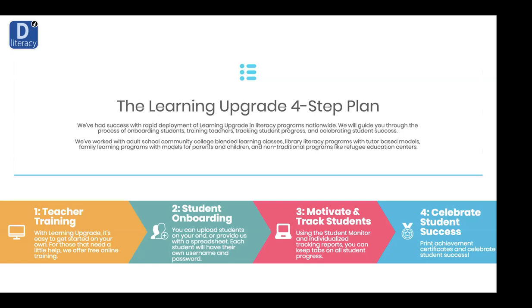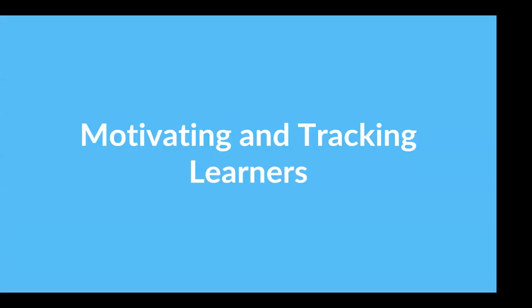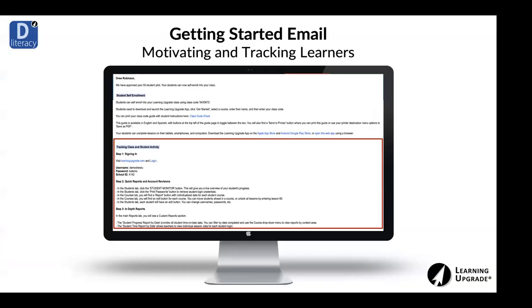Once you've provided learners with enrollment instructions, they're going to start completing lessons. Once they start, you're going to want to log in to your teacher account and see how they're doing. I've provided these instructions in your getting-started email. You'll see the first block covering student self-enrollment, and now we begin tracking class and student activity. Step one is to sign in — there's a link to our login page, and I'll be providing your teacher username, password, and school ID in the email.